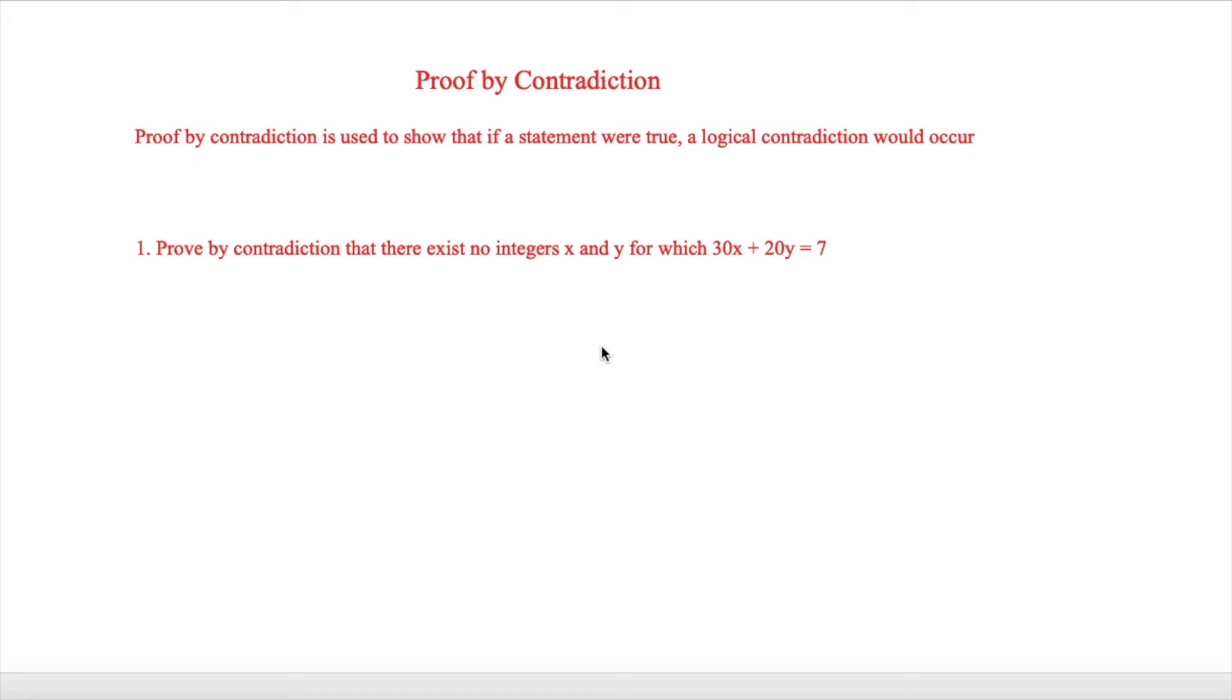The first question is: prove by contradiction that there exist no integers x and y for which 30x + 20y = 7. The first thing we have to do is assume that there are integers which could do that. So we're assuming the opposite.